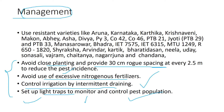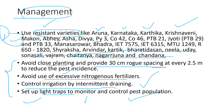Resistant varieties are important for good marks. Resistant varieties include Aruna, Karnataka, Kartika, Krishnaveni, Macon, Abhi, Asha, Divya, PY3, Bardidasan, Neela, Udai, Sonasali, Vajram, and Chaitanya Nagarjuna. If you can remember three to four of these names, you can solve almost all related questions. Most of these are South Indian names, so South Indian students can easily remember them.